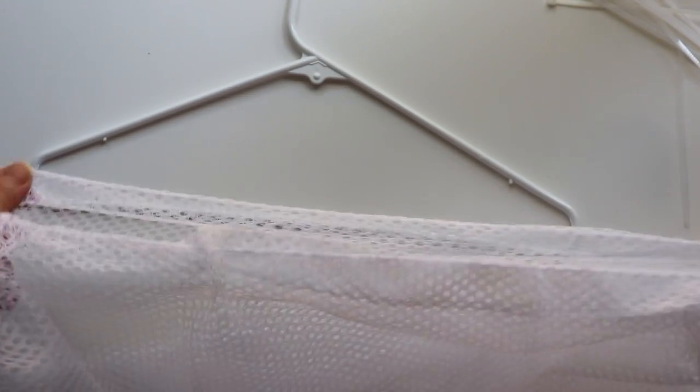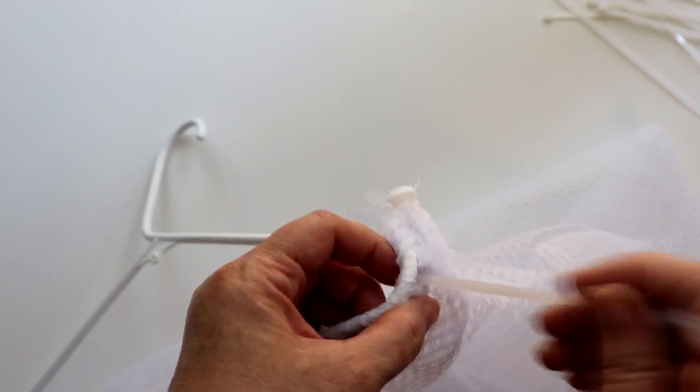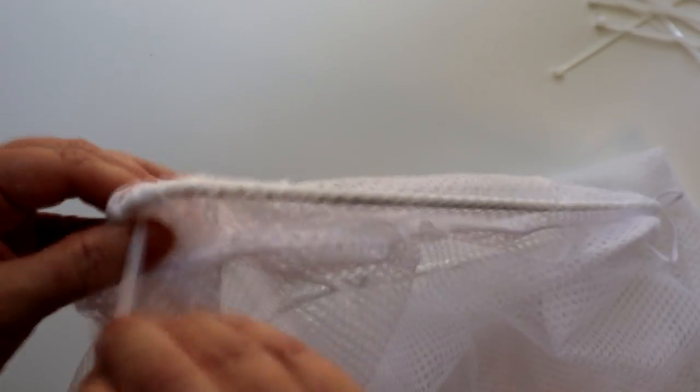From here, I took one of the hangers and laid the open end of the mesh laundry bag on top. Next, I took the back side of the bag and wrapped the material around the bottom of the hanger. I took a zip tie and ran it through the mesh and around the hanger to secure it on one side and then on the other.